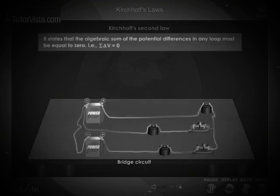Kirchhoff's second law states that the algebraic sum of the potential differences in any loop must be equal to zero. That is, the sum of the EMF of the sources of energy in the circuit and the potential drop across the resistive elements is equal to zero.